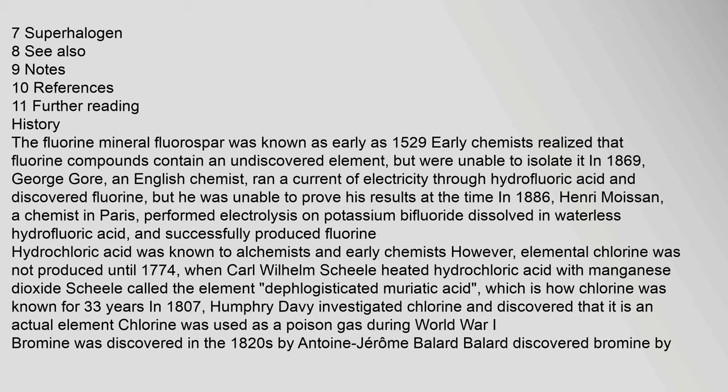In 1886, Henri Moissan, a chemist in Paris, performed electrolysis on potassium bifluoride dissolved in waterless hydrofluoric acid, and successfully produced fluorine. Hydrochloric acid was known to alchemists and early chemists. However, elemental chlorine was not produced until 1774, when Carl Wilhelm Scheele heated hydrochloric acid with manganese dioxide. Scheele called the element deflogisticated muriatic acid, which is how chlorine was known for 33 years.